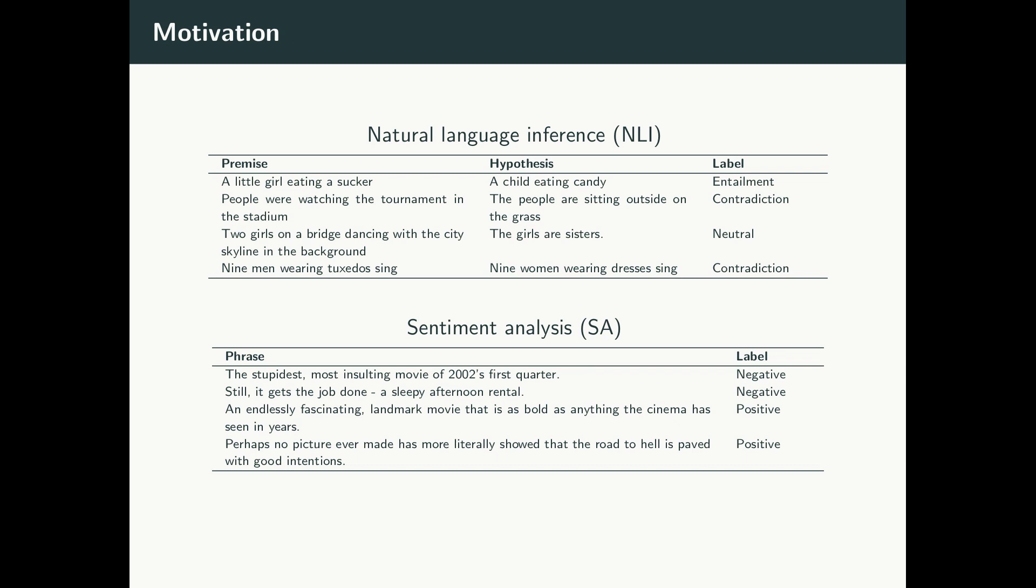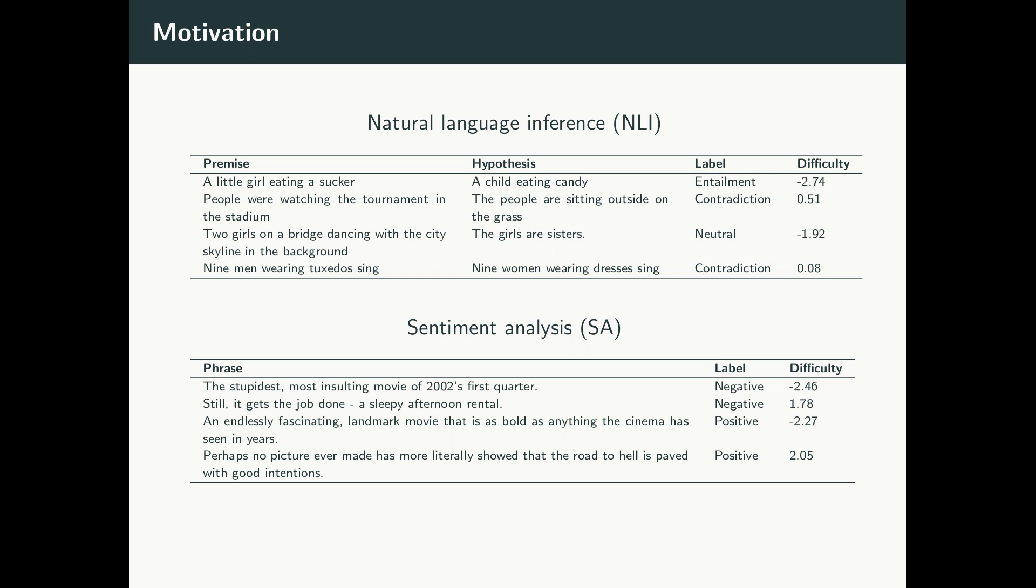To start let's look at the examples on this slide. These were taken from NLP data sets for natural language inference and sentiment analysis respectively. If they were used in a test set for some deep learning model each would carry equal weight when calculating test set accuracy and therefore determining model performance. But if we look closely we can see that certain examples are easier than others. For example there is a difference between the two negative sentiment examples with the first being very negative and the second being closer to neutral.